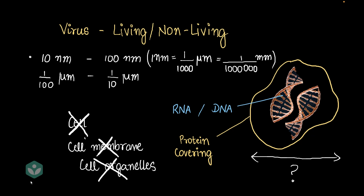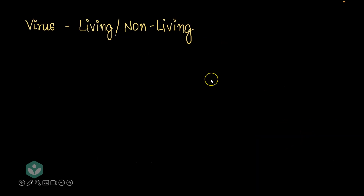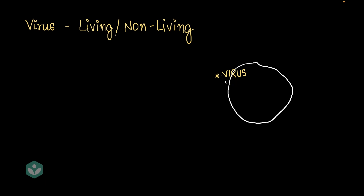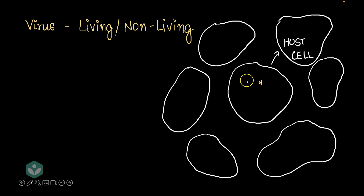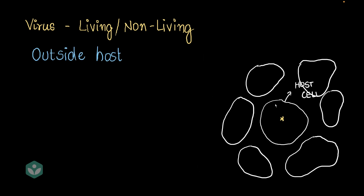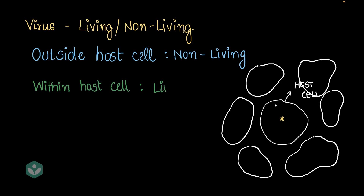Now let's move on and see what a virus actually does — how does it behave? So this is a virus — I've drawn an asterisk symbol here to denote the virus — and this is a human cell. We're multicellular, right? Until the virus is outside a living cell, it can do nothing. But the moment the virus enters a living cell, it starts becoming active. When a virus enters a living cell, that living cell is now called the host cell, and the virus is a guest — most probably a very bad guest. Outside the living cell, the virus is non-living. But the moment the virus gets within the host cell, it starts acting like a living being in some respects.